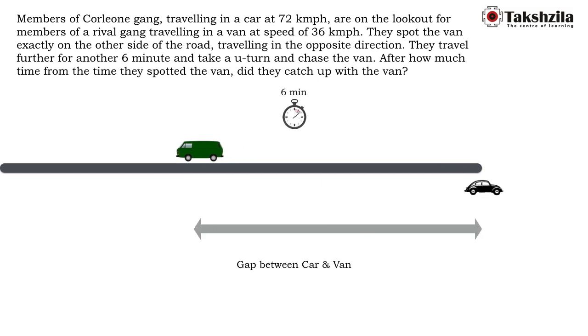It is six minutes. At what rate is this gap created? The car moves right at 72 kilometers per hour, the van moves left at 36 kilometers per hour, so the rate is going to be 72 plus 36, that is 108 kilometers per hour. The gap is created at this rate.